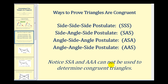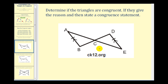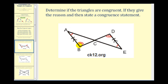Here we're given a sketch and we're going to determine if the triangles are congruent, and if they are, give the reason and state a congruence statement. Notice that we're given that segment AB is congruent to segment DE, and they're also parallel. So if these two segments are parallel, BD and AE would be transversals, and therefore the alternate interior angles would have to be congruent. So angle A is congruent to angle E, and angle B is congruent to angle D. Looking at the information we have, we have angle-side-angle in both of these triangles.